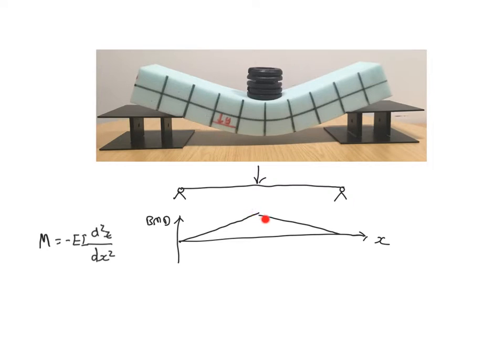At mid-span, where the bending moment is at a maximum, the curvature of the beam is also at a maximum. Near the supports, where the bending moment is close to zero, the curvature is also close to zero - it's nearly a straight line at these points.